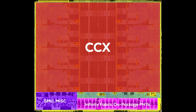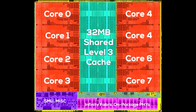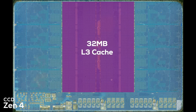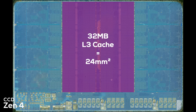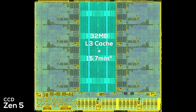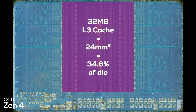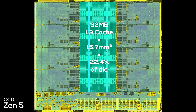The CCX itself is split up into two distinct parts: a large unified L3 cache in the center, surrounded by 8 individual Zen 5 CPU cores. One of the first things I noticed was the much more compact L3 cache area. On Zen 4, the L3 cache area takes up a total of 24 square millimeters, while on Zen 5 it only uses 15.7 square millimeters. On Zen 4, the L3 cache takes up 34.6% of the entire die — more than a third. On Zen 5, the L3 cache only uses 22.4% of the chip, so less than a quarter. That's a massive reduction.